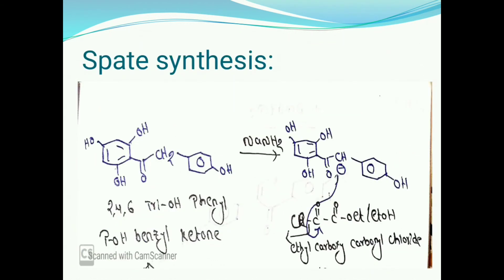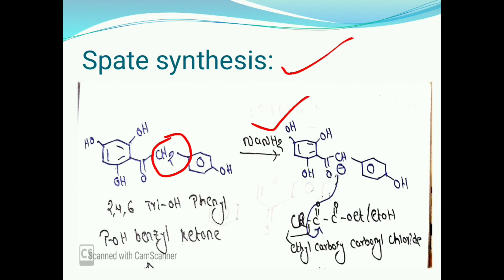Another method is Spate synthesis method. In this method, we again start with 2,4,6-trihydroxyphenyl-parahydroxybenzyl ketone, which is treated with sodamide. In the presence of sodamide, the CH2 group loses H+ ion and is converted into CH⁻.